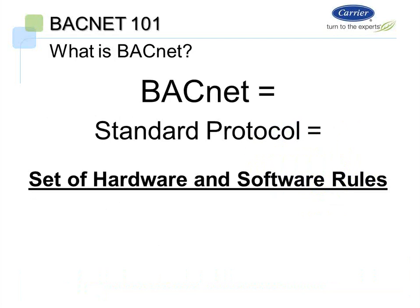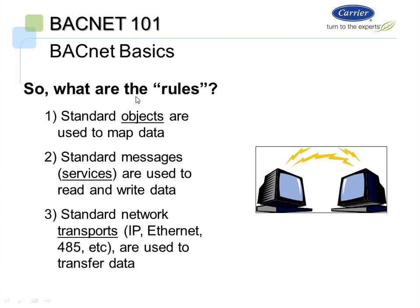BACnet is a standard protocol and a set of hardware and software rules. Let's look at the software rules. There are three main software rules: you need to use standard objects to map data, you need to use standard messaging or services to read and write that data, and you need to use a standard network or transport in order to transfer that data.